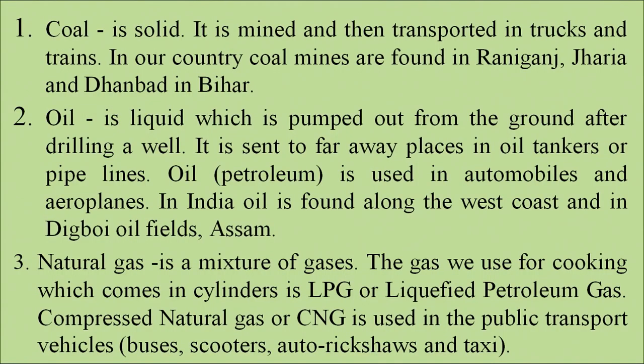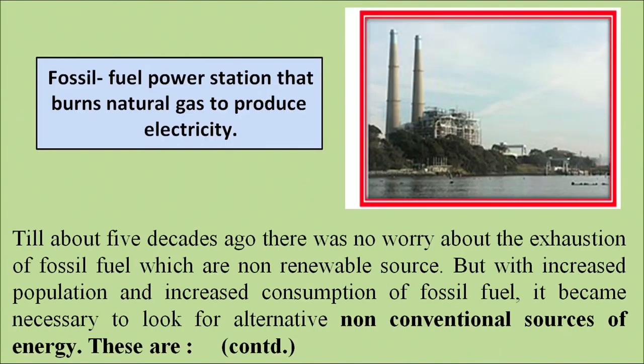Oil is a liquid form pumped from the ground after drilling a well and sent to far-off places through tankers or pipes. Oil is used in automobiles and aeroplanes. In India, oil is found along the west coast and in Digboi in Assam. Natural gas is a mixture of gases with methane as a primary component. The gas used for cooking comes in cylinders as LPG (liquified petroleum gas) or as CNG (compressed natural gas), largely used for public vehicles. With increased population and consumption of fossil fuels, it has become necessary to look for alternative non-conventional sources of energy.